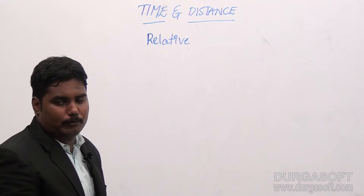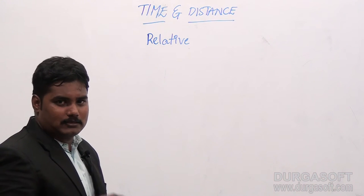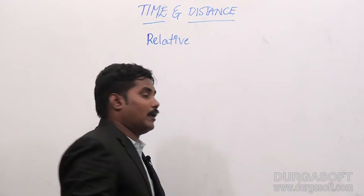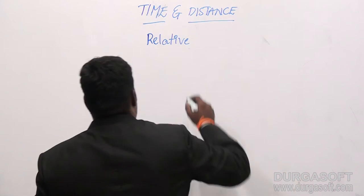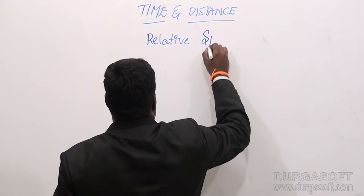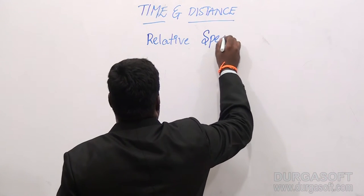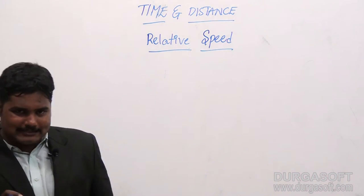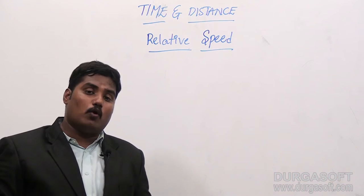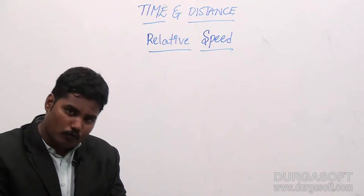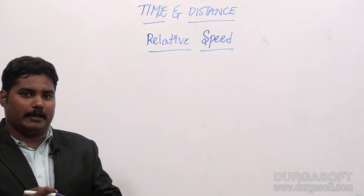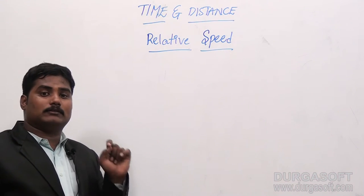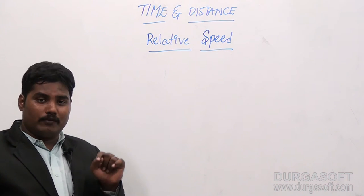Relative speed also applies in a circular track — whether objects move in the opposite direction or the same direction. Relative speed concept arises if and only if when the two objects are in moving position.